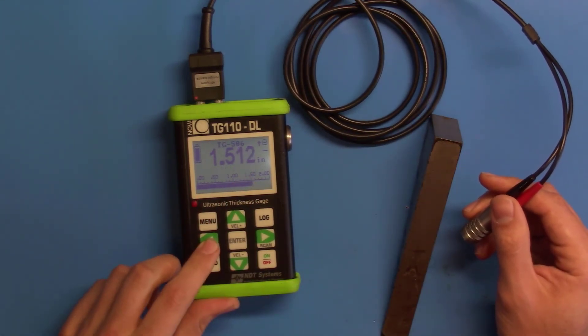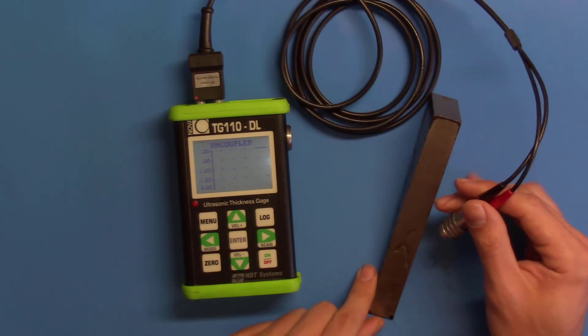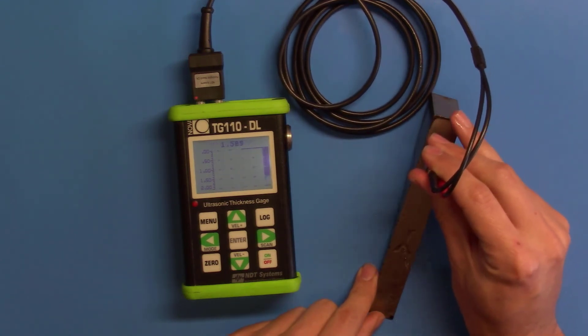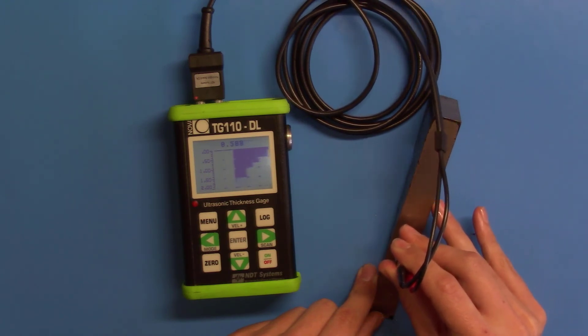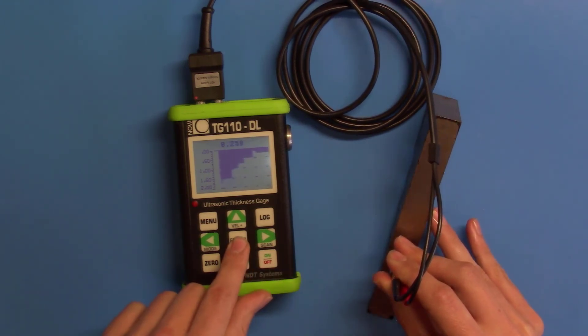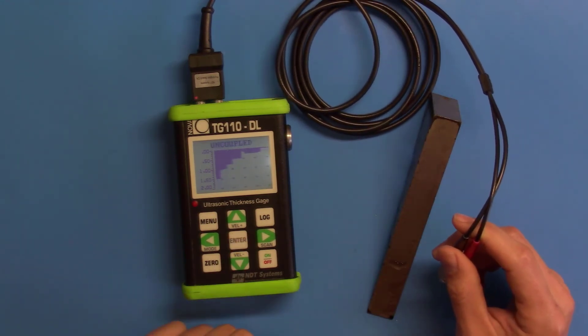In addition to those two, we also have a time-encoded B scan. If you hit the right arrow key, it'll take you to that menu. It gives you a real-time picture of the thicknesses on a part. You can go ahead and pause the scan using the Enter key, and you can resume the scan by pushing the Enter key again.